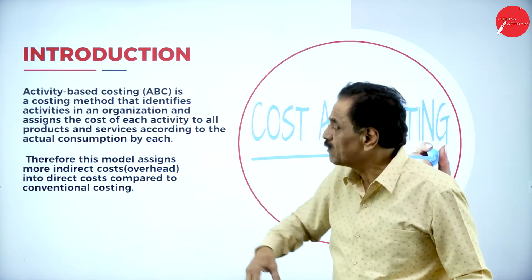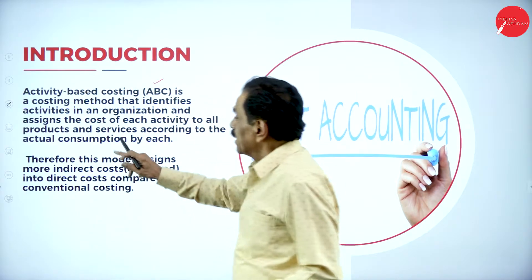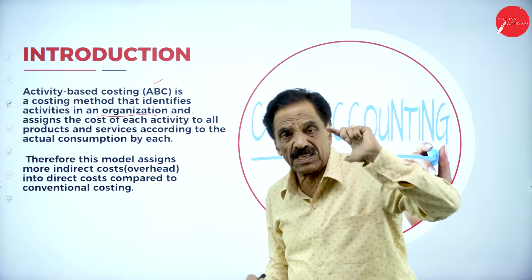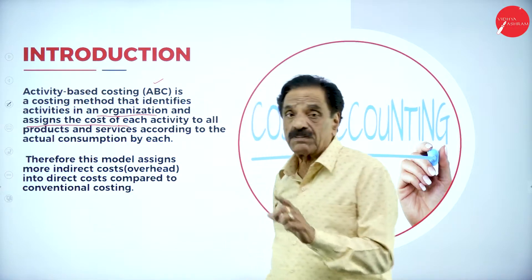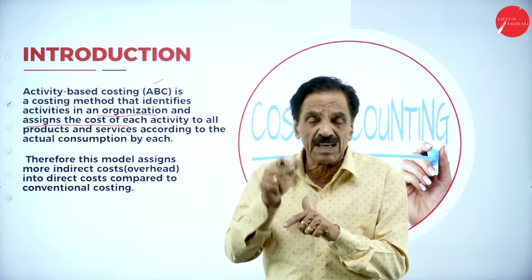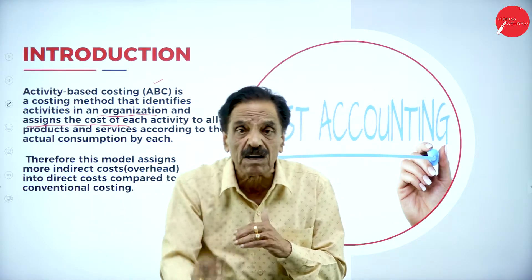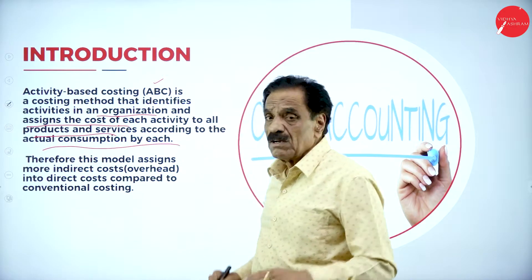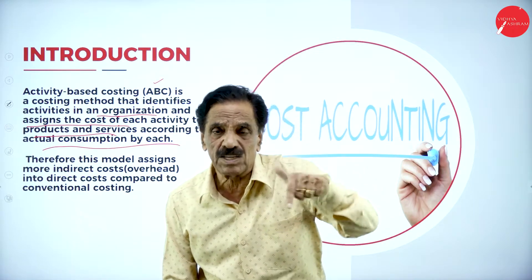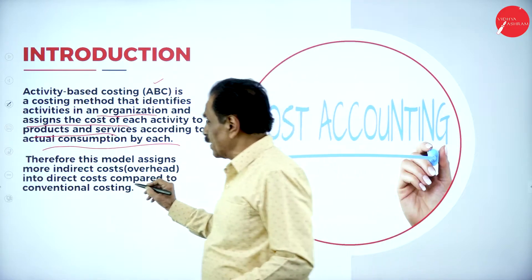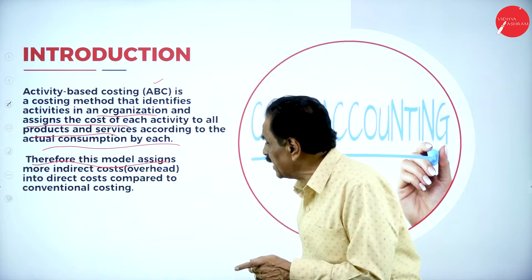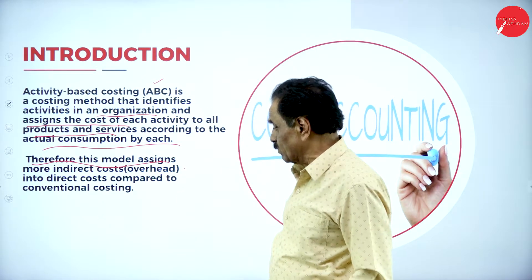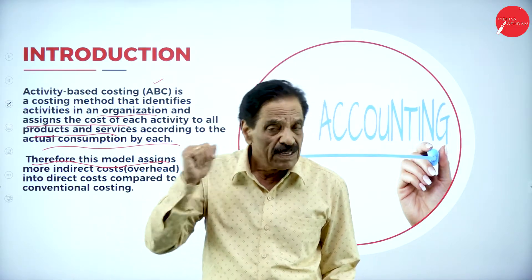Activity Based Costing, or ABC, is a costing method that identifies the activities in an organization — that is, what activities took place — and assigns the cost of each activity. The major goal is to find the cost of each activity and assign it to all products and services according to actual consumption. This method assigns more indirect costs — overhead, meaning indirect material, indirect labor, indirect expenses — into direct cost, compared to conventional costing.